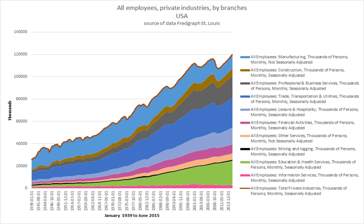Employee benefits are various non-wage compensation provided to employees in addition to their wages or salaries. The benefits can include housing, group insurance, disability income protection, retirement benefits, daycare, tuition reimbursement, sick leave, vacation, social security, profit sharing, funding of education, and other specialized benefits.